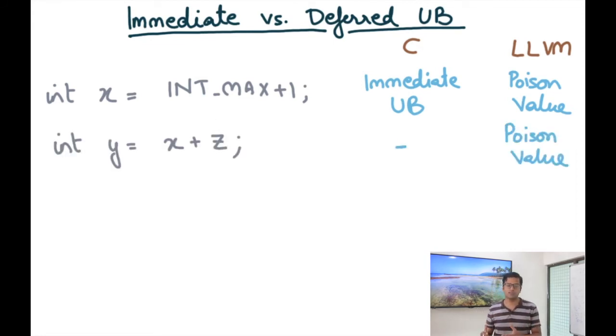Further, we define the operational semantics of the poison value. For example, one of the important characteristics is the poison value propagates. So for example, if x is a poison value, then I can add it to anything or do any other operation on it and I can end up with a poison value again. So once again, I get a poison value.